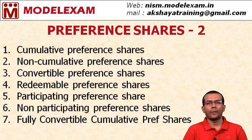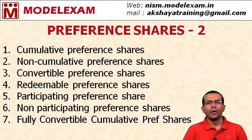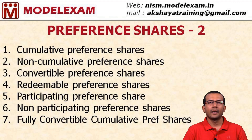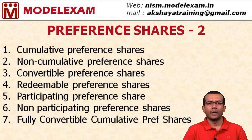The seventh type is fully convertible cumulative preference shares. As the name indicates, the entire amount of these shares will be convertible to equity shares. It consists of two parts: Part A, which is automatically converted to equity, and Part B, which is optionally convertible to equities. These are all the different types of preference shares.